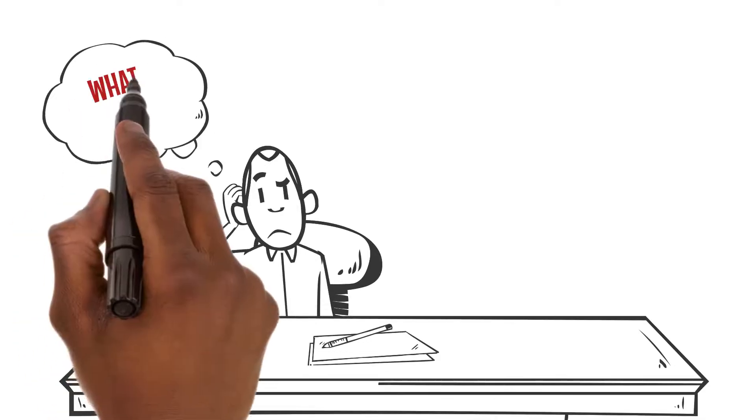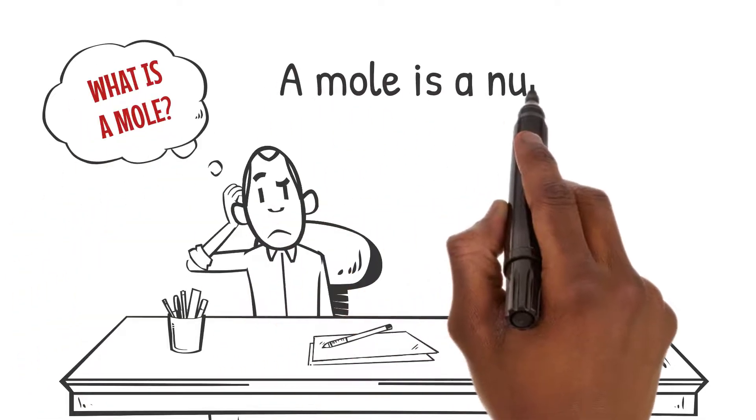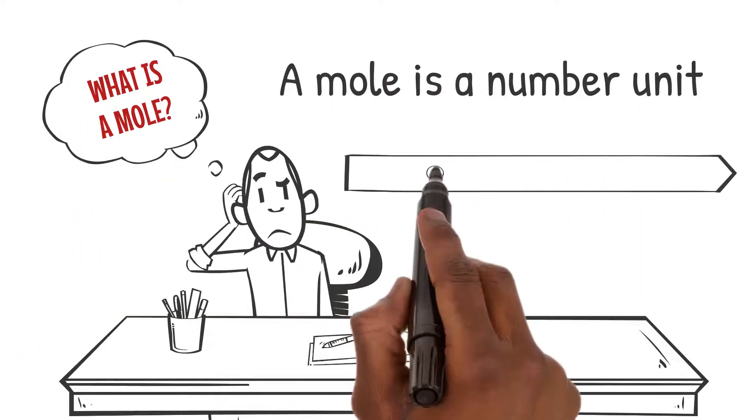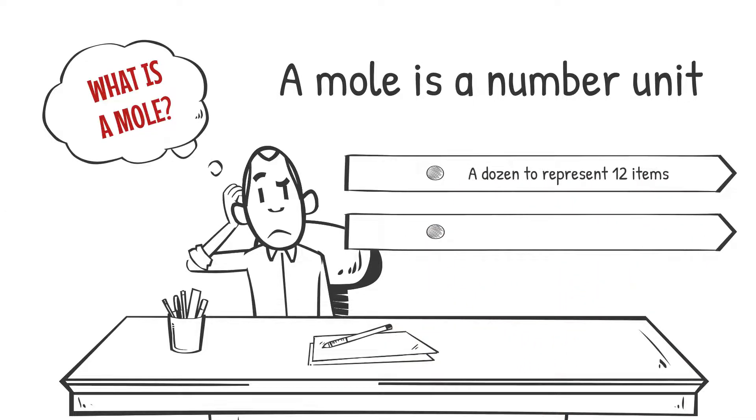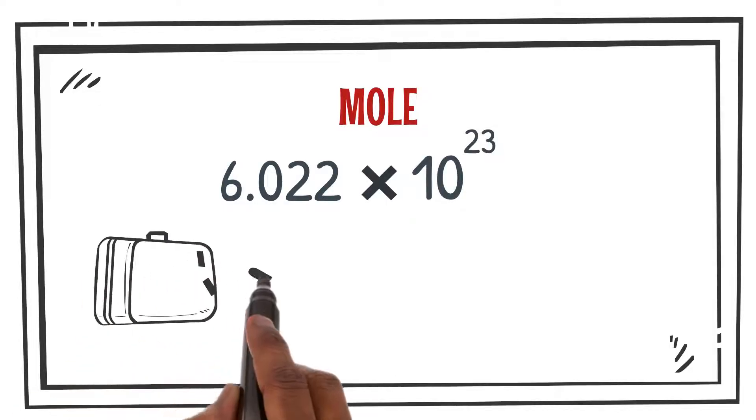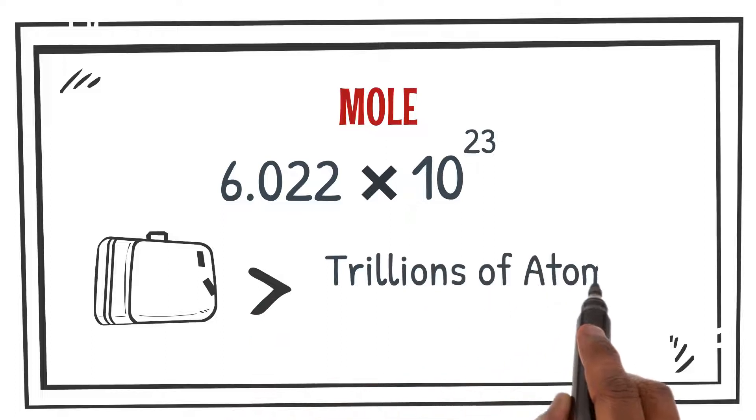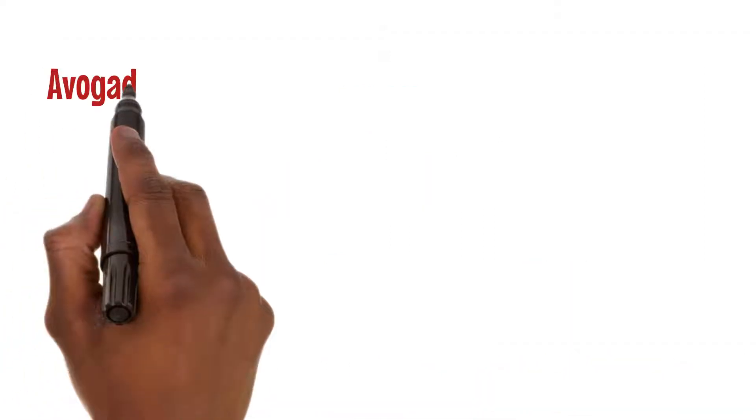A mole is a number unit. Just like we use a dozen to represent 12 items, we use a mole to represent a mind-bogglingly large number of particles. A mole is a whopping 6.02 × 10^23 particles. It's like having a suitcase filled with trillions of atoms or molecules. That's why we call it Avogadro's constant, named after the brilliant scientist Amedeo Avogadro.